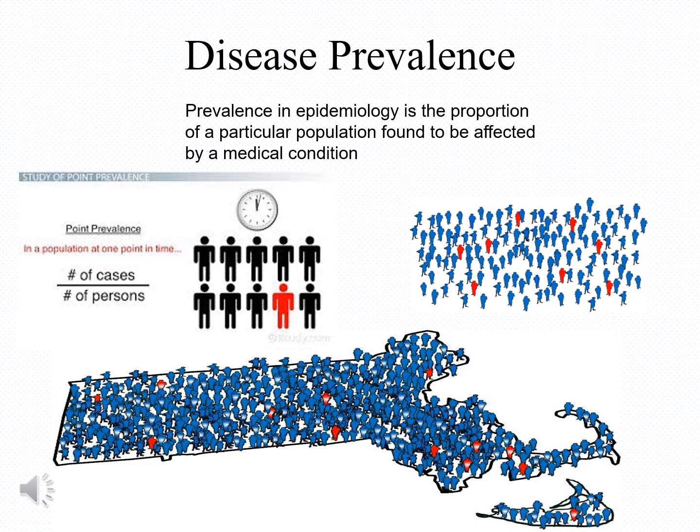For example, in the left side of the slide, we show ten people — nine in black font and one in red — which indicates that there is one patient out of ten who has the disease. This is the prevalence of the disease, defined as the number of cases divided by the number of all persons.